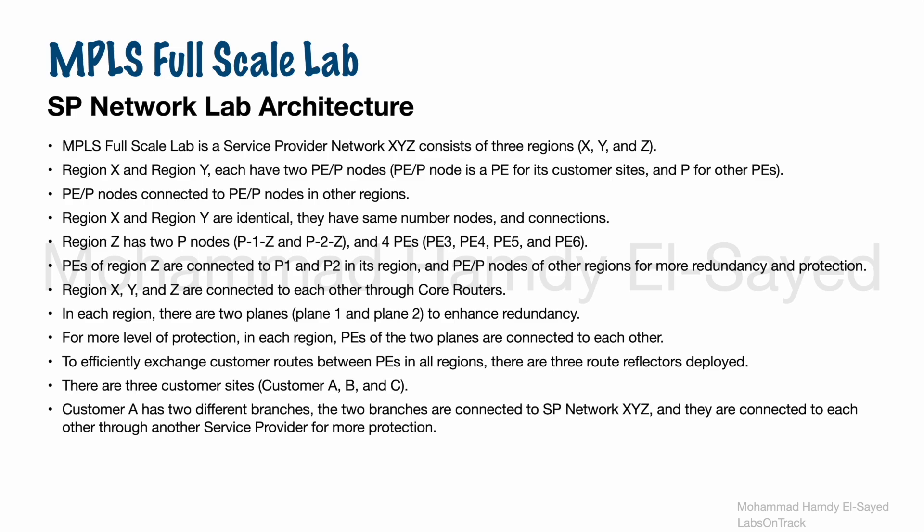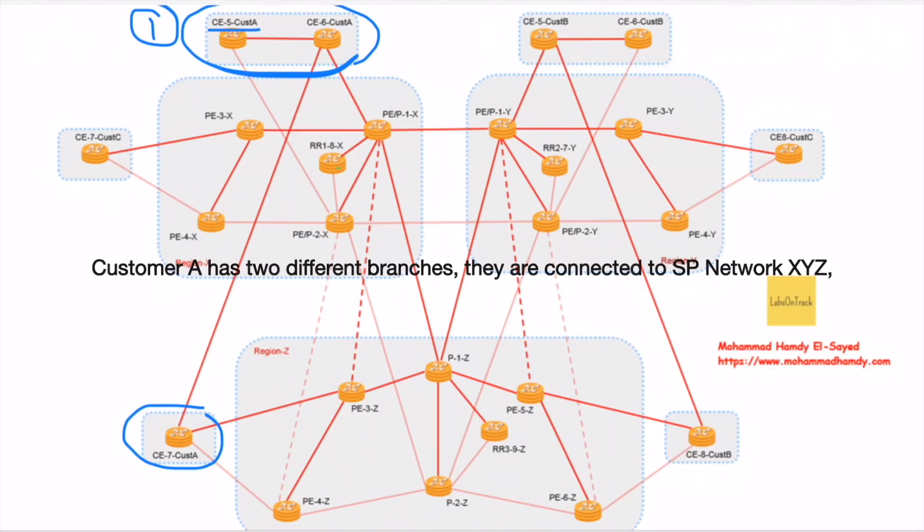Customer A has two different branches. The first branch consists of two routers, CE5 and CE6, and they are connected to the two planes of region X. They are connected to PEP1X and PEP2X to enhance redundancy for customer A. The second geographical site for customer A is represented by CE7, and this branch is connected directly to region Z, both planes of region Z to PE3Z and PE4Z, and it has direct connectivity to the first branch of customer A site. CE7 customer A is connected directly to CE6 customer A. This is for more protection and another level of redundancy. Customer A required to connect its branches directly with another provider.